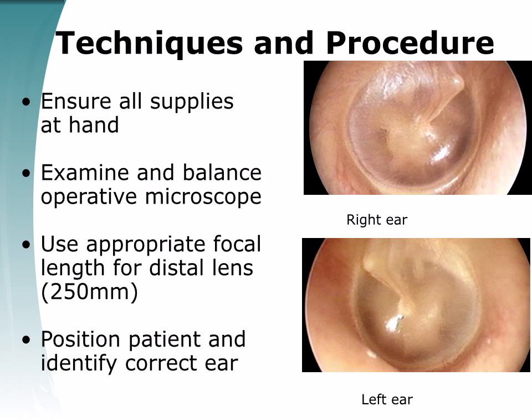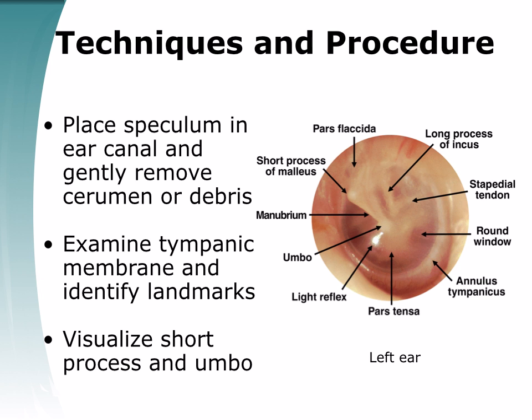Ensure that all the supplies needed are at hand and that the operative microscope has been examined and balanced. The appropriate focal length for the distal lens is 250mm. Position the patient and identify the correct ear. Place a speculum in the ear canal and remove cerumen or debris using spoon and suction. Examine the tympanic membrane and identify the landmarks.